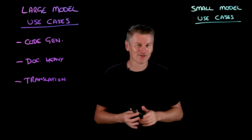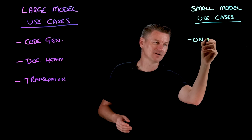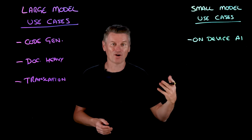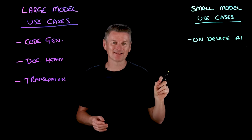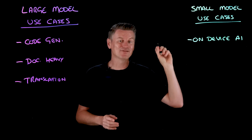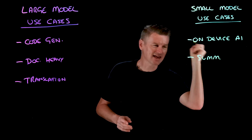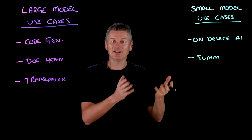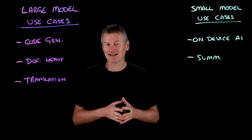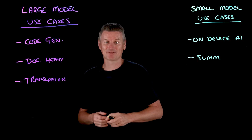There are cases where small models are not only good enough but outright preferable. On-device AI — keyboard prediction, voice commands, offline search — lives or dies by sub-100-millisecond latency and strict data privacy, and small models that run on-device are great for that. Everyday summarization is another sweet spot: in a news summarization study, Mistral 7B Instruct achieved ROUGE and BERTScore metrics statistically indistinguishable from GPT-3.5 Turbo, despite running 30 times cheaper and faster.